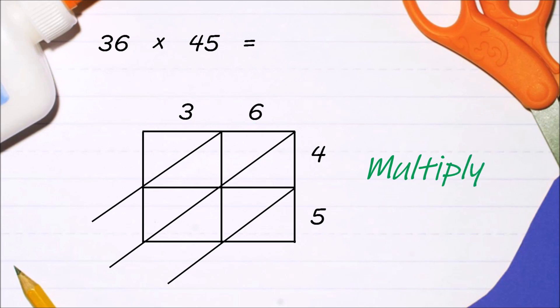Six times four is 24. Write two on top and four at the bottom. Same goes with the other numbers. Three times four is 12. Six times five is 30. And three times five is 15.